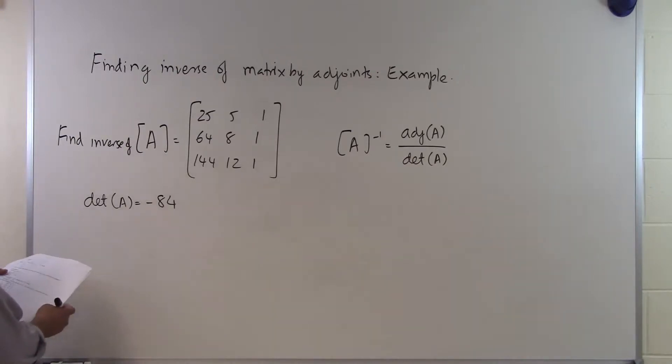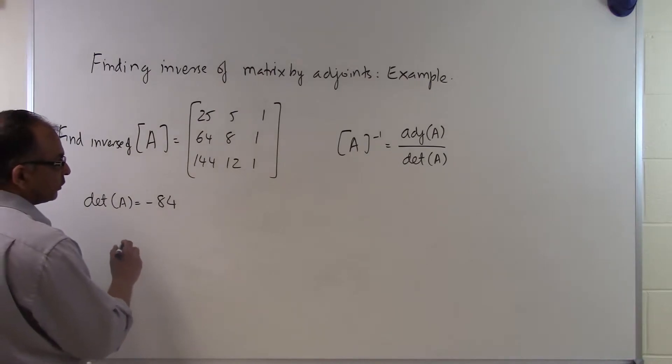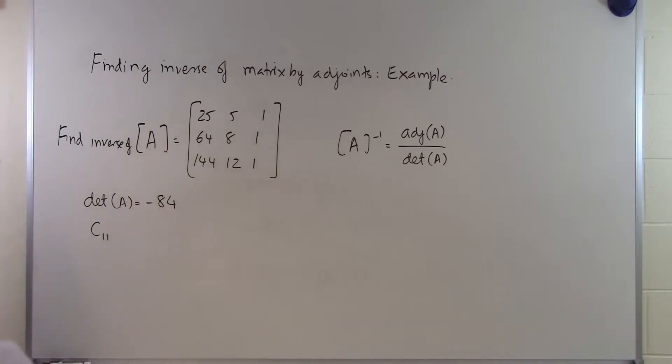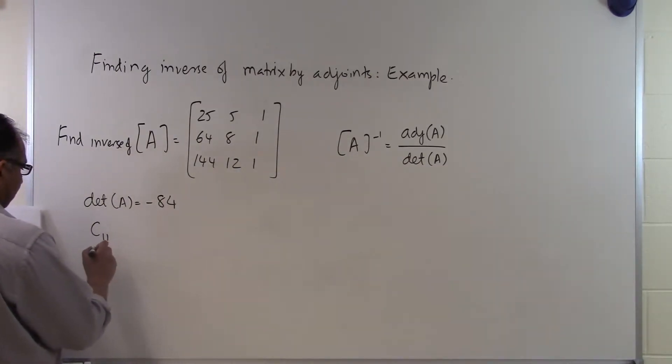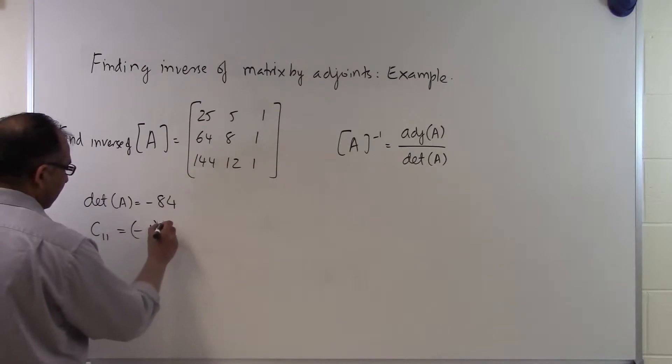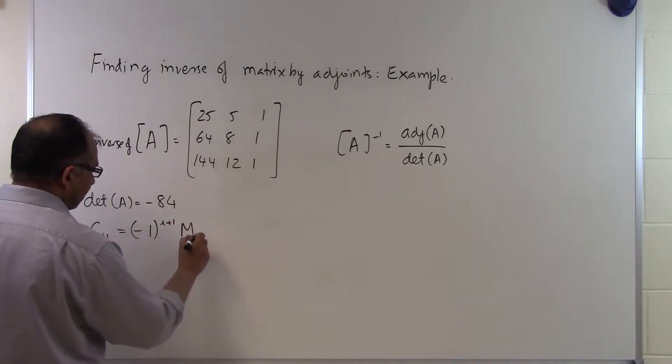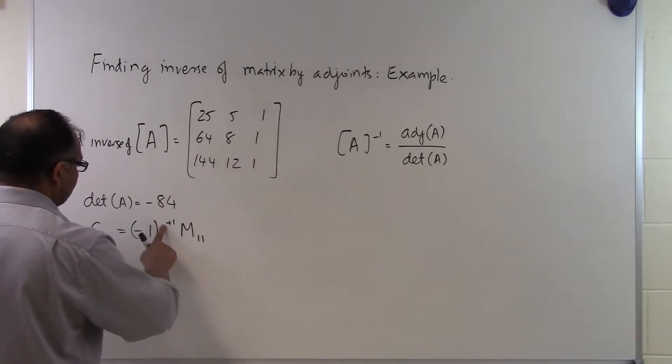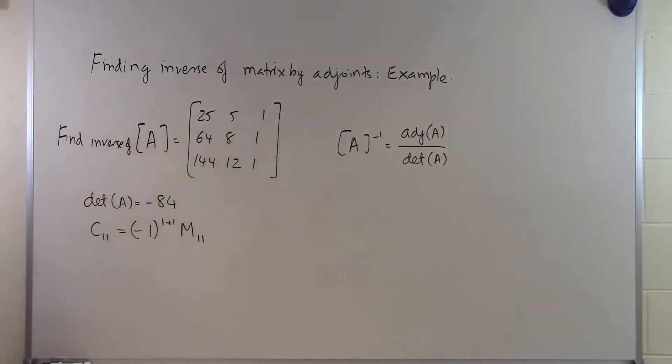Let's see how do we find the adjoint of A. The adjoint of A is going to be based on the cofactors. If we're going to find cofactor C11, cofactor C11 will be corresponding to the element A11, which is 25 right here, and that's defined as minus 1 raised to the power 1 plus 1 times M11.